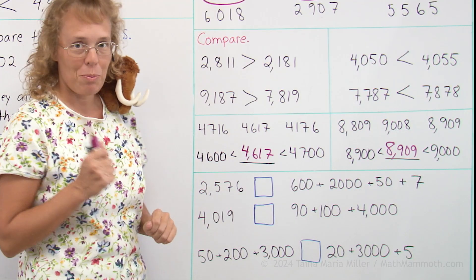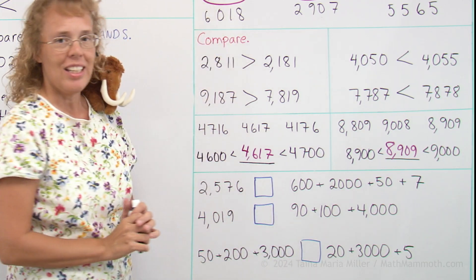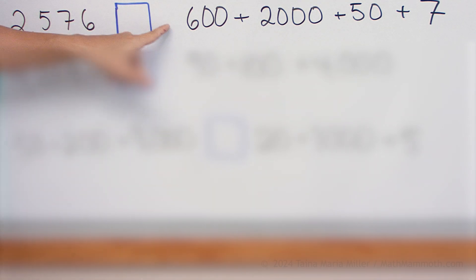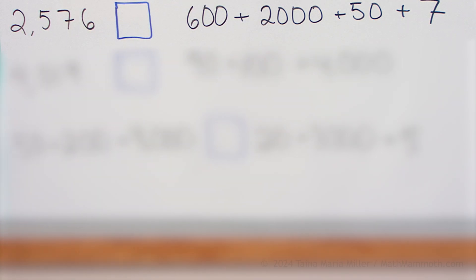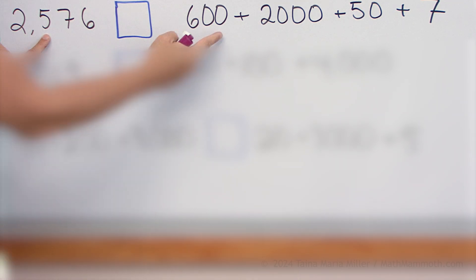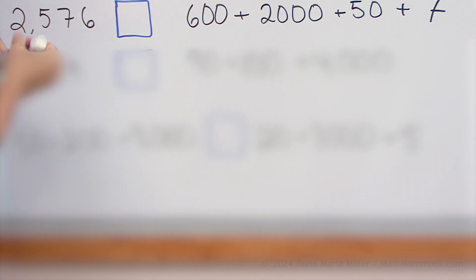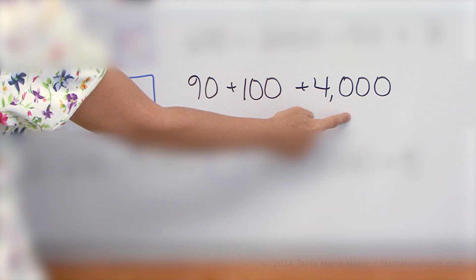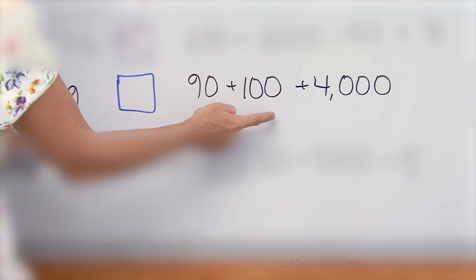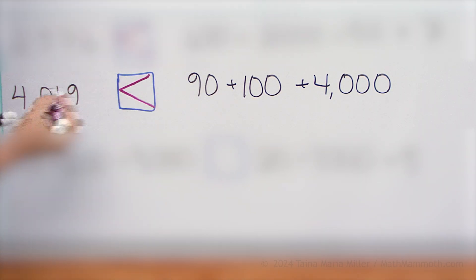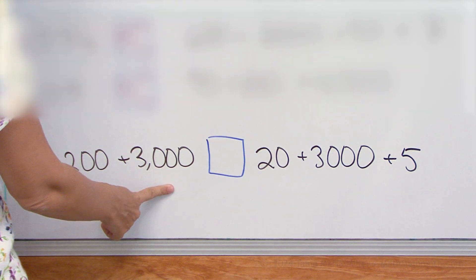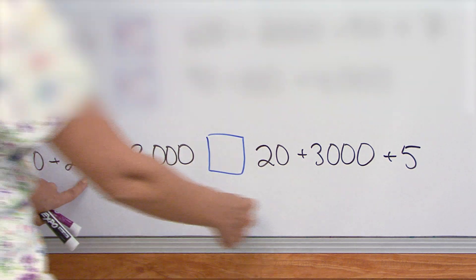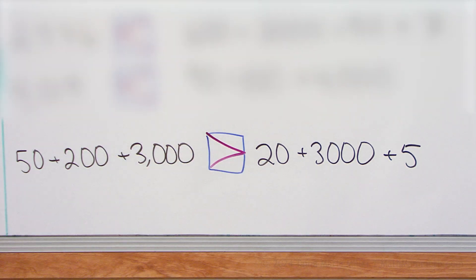In this section, we get to compare again and write those alligator mouths in these boxes. On this side I have two thousand five hundred seventy-six; on the other side, the number is written as a sum. It has six hundred, two thousand, fifty-seven. Two thousand here, two thousand here — those are the same. Then five hundred here, six hundred here — six hundred wins, so this one will be the greater number. Then four thousand nineteen — over there we have four thousand, then zero hundreds and one hundred, so one hundred is more and that side wins. And then lastly: fifty, two hundred, three thousand versus twenty, three thousand five. Start with the thousands — three thousand, three thousand. How about hundreds? Two hundred versus no hundreds — that solves it. This number is greater. We're all done with this lesson.